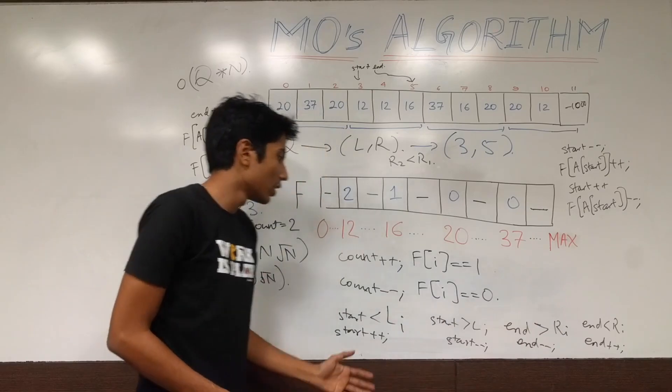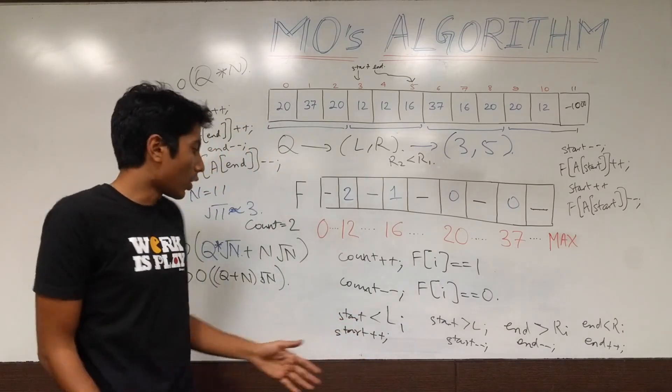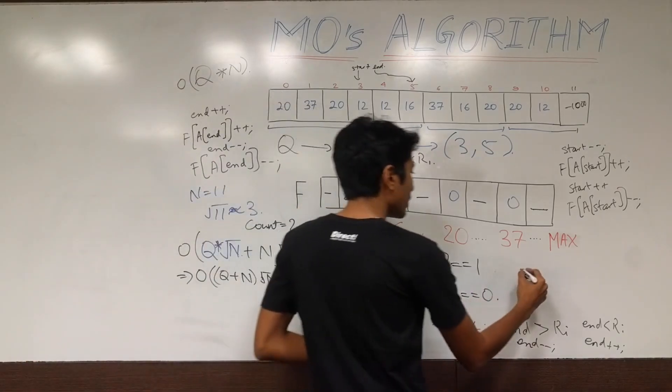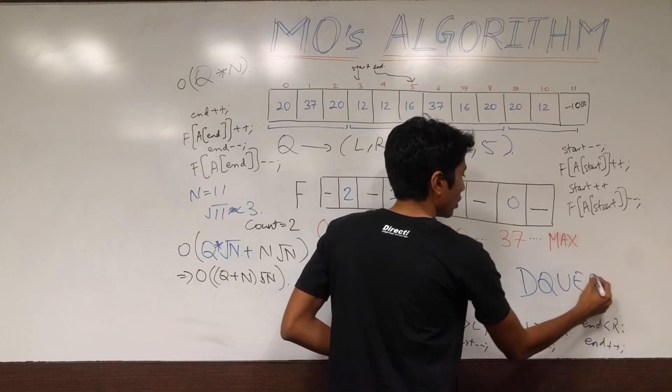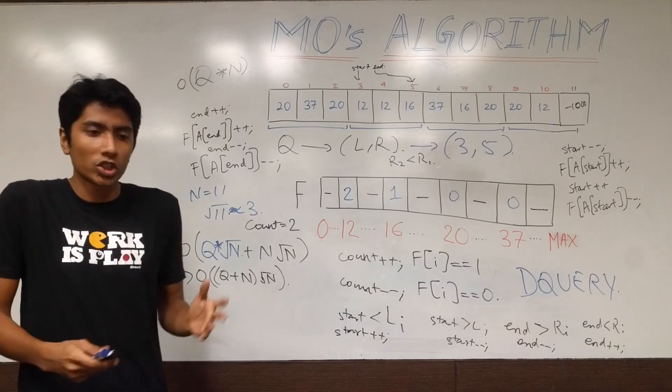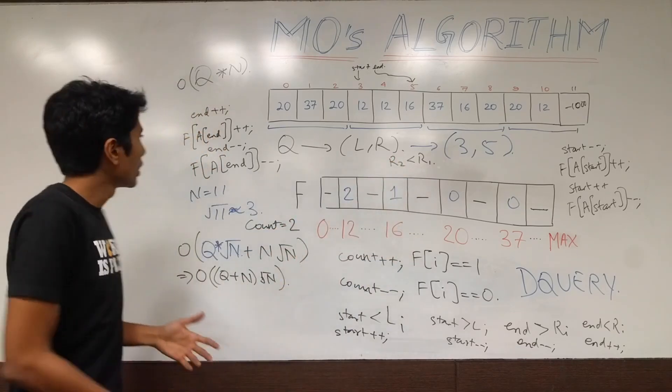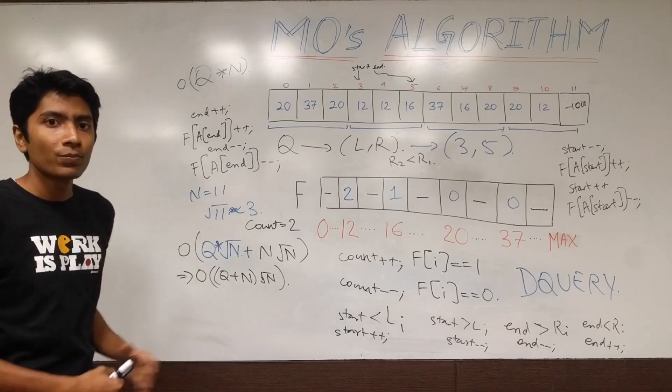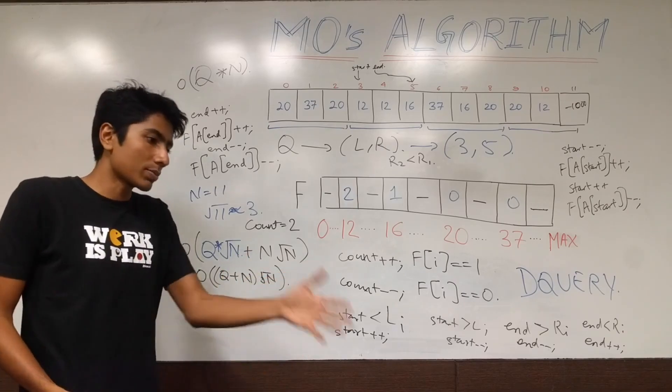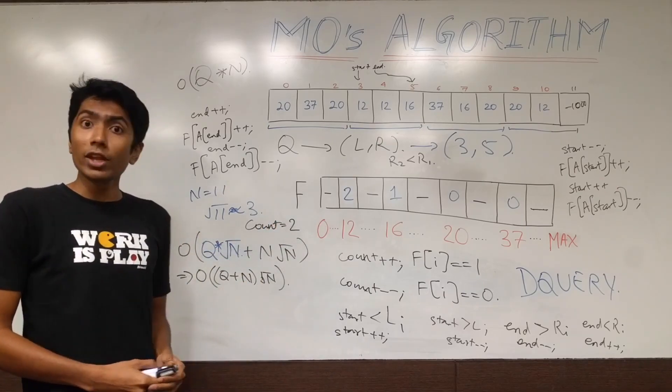And once all four of these conditions fail, so you know that start is equal to L of I and end is equal to R of I, then just print out count for that range. And therefore you have dquery solved. So, that's it for now. Mo's algorithm is something which is using simple operations and simple techniques of sorting to bring down your complexity from this to this. And we'll be talking about updates in Mo's algorithm. So, in case you want to subscribe for that, you can subscribe to the channel. If you have any doubts or queries for this video, please put them in the comments below. I'll be happy to help. And see you next time.